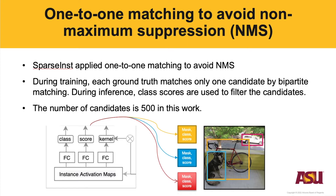To avoid non-maximal suppression, Sparse Inst applies one-to-one matching. The model still predicts a fixed number of predictions, but during training, each ground truth can only match one candidate via bipartite matching, so there is only one positive sample per ground truth. Only this positive sample receives a high class score, and during inference these class scores are used to filter the candidates. The number of candidates is 500 in our work.